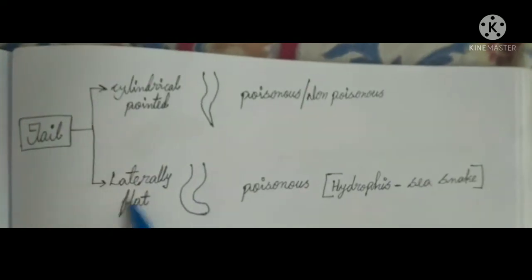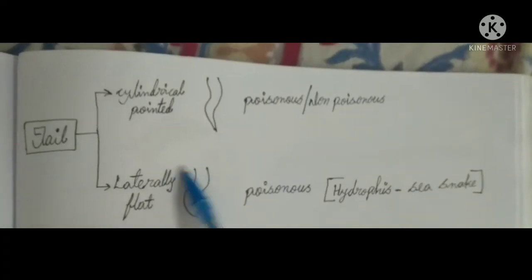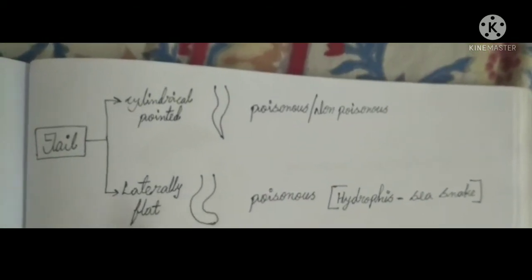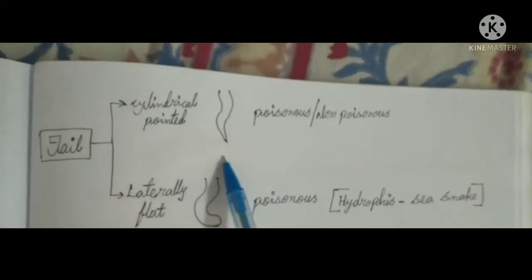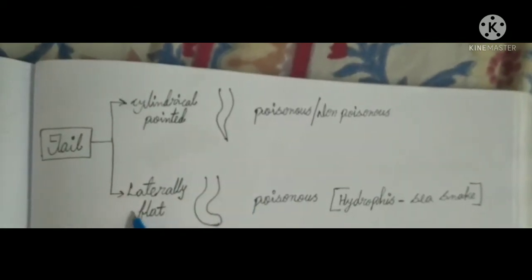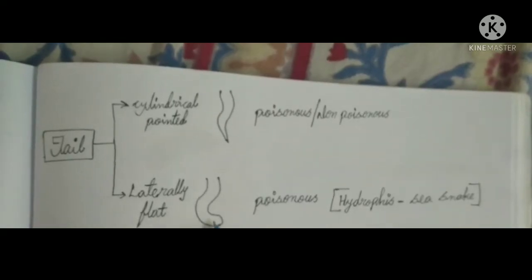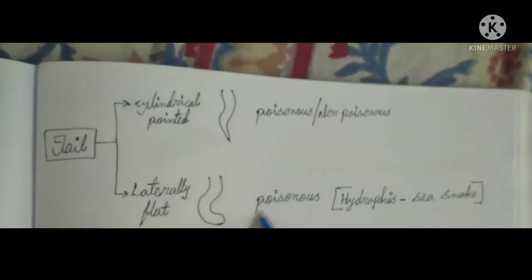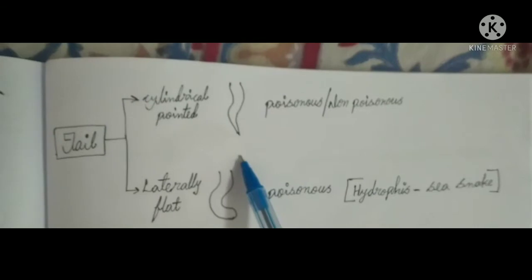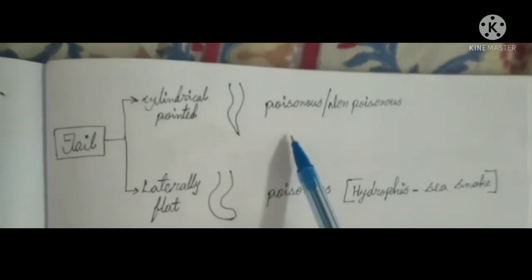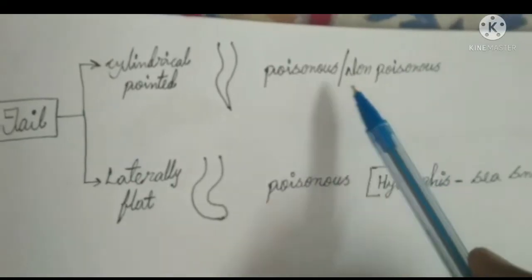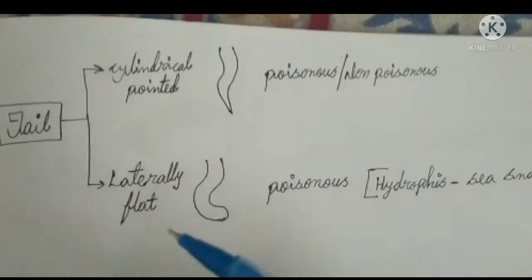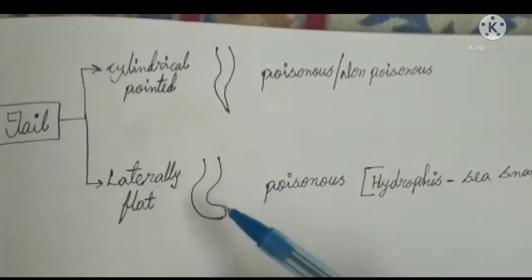Let's take a tail and take two tails. Cylindrical pointed, laterally flat. Cylindrical pointed is a stoop. Flattened is anisabadi. Cylindrical pointed is a buchara. Laterally flattened pointed is a buchara. Now we use a buchara.